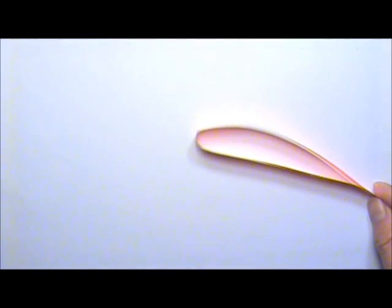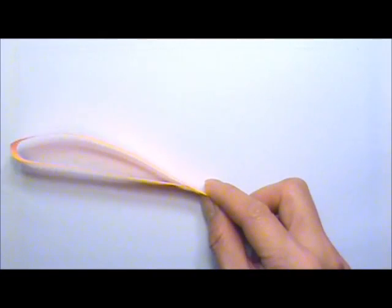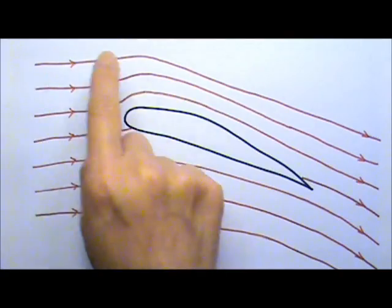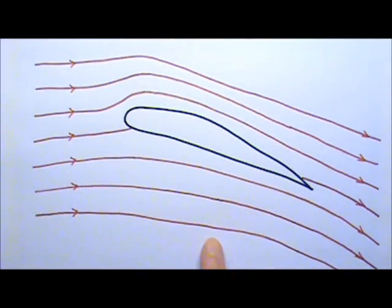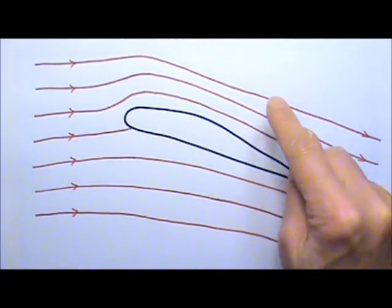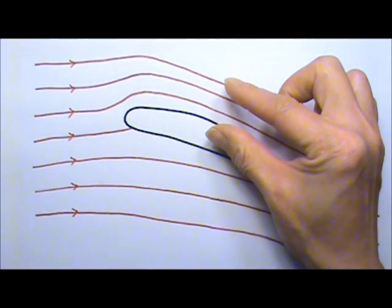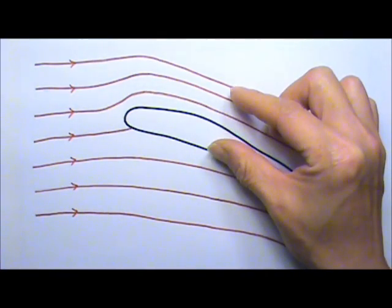When a wing goes through the air, it creates a streamline flow around it. Relative to the wing, the streamline air flow is like this. Above the wing, there is constriction. See how the streamlines are squeezed together?